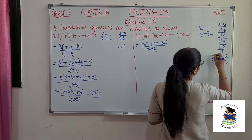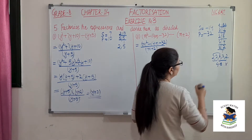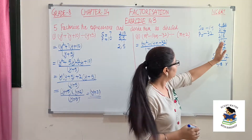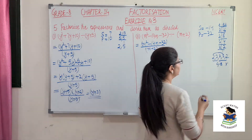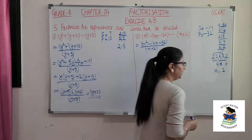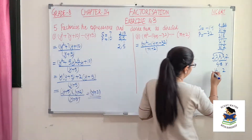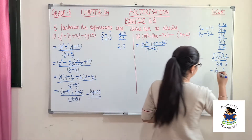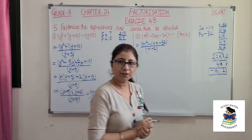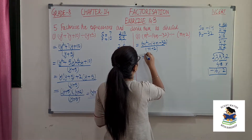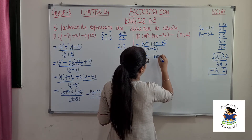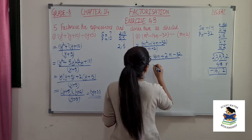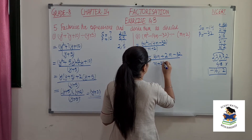So we write: m squared minus 16m plus 2m minus 32 over m plus 2.